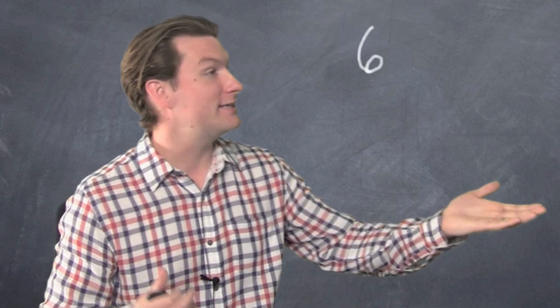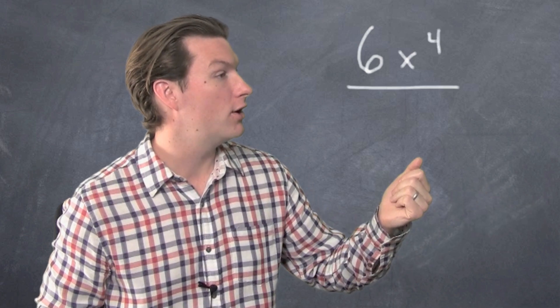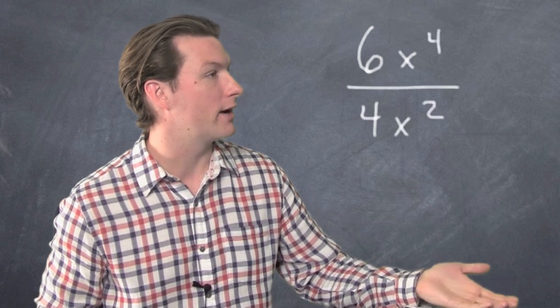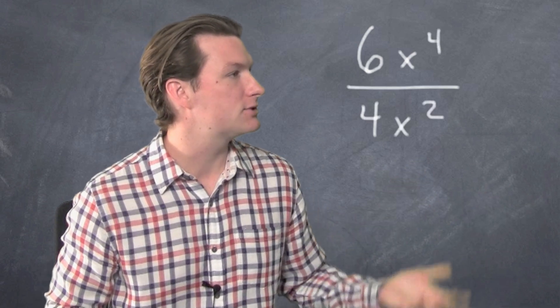Let's say we have 6x to the 4th over 4x squared. Okay. We've got big numbers and small numbers.